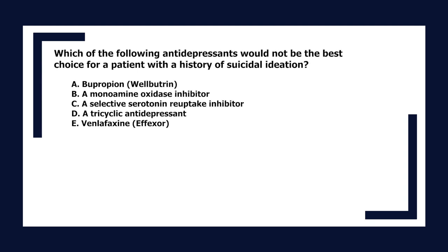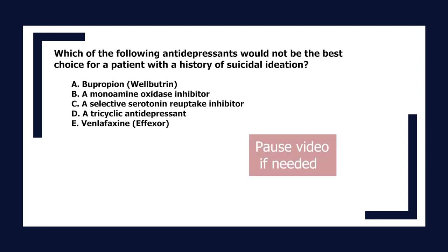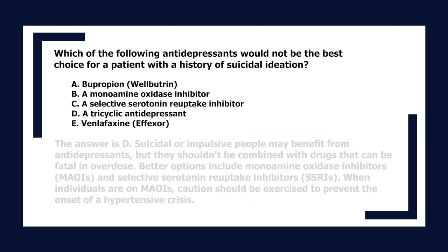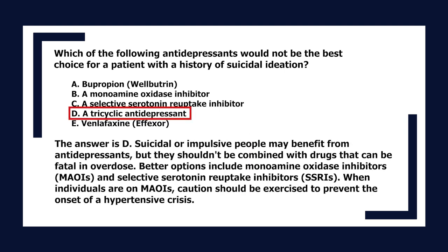Which antidepressant would not be the best choice for a patient with a history of suicidal ideation? A. Bupropion, B. A monoamine oxidase inhibitor, C. A selective serotonin reuptake inhibitor, D. A tricyclic antidepressant, E. Venlafaxine. The answer is D. Suicidal or impulsive patients shouldn't be prescribed drugs that can be fatal in overdose. Better options include MAOIs and SSRIs, though caution should be exercised with MAOIs to prevent hypertensive crisis.